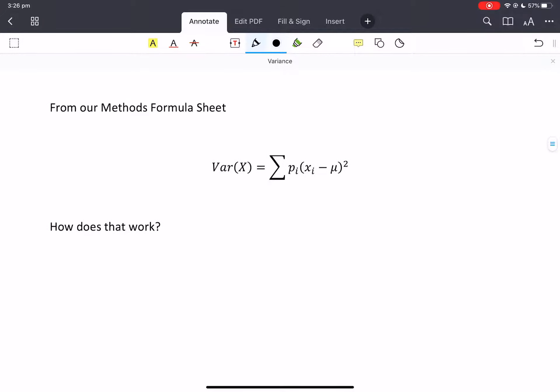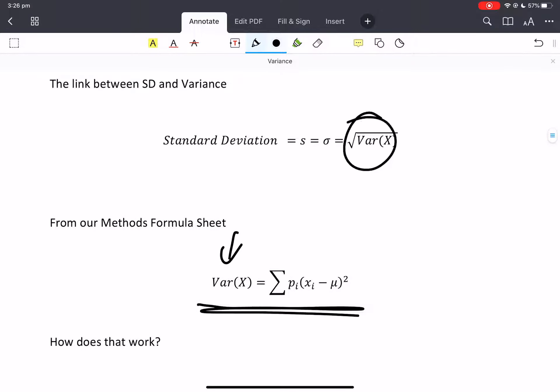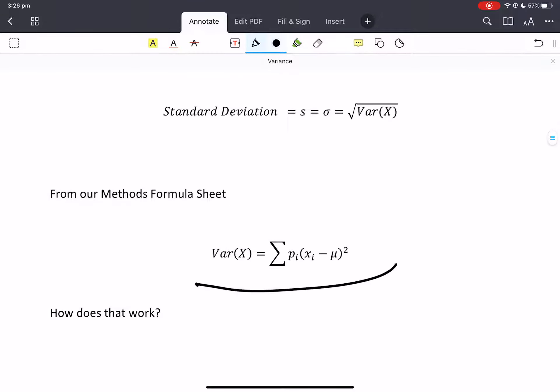In our formula sheet we have this bad boy. Variance equals. So we will be able to calculate the variance and then from the variance we just square root it to get our standard deviation. This looks fun doesn't it? So let's see how that thing works. So we're summing something together aren't we? We're summing some sort of multiplier together.